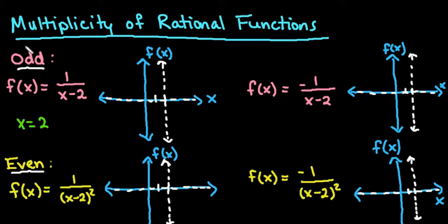The first thing I'm looking at is the odd multiplicity. Odd multiplicity means that the denominator has an odd degree. In this case, it's understood to be 1. There's just one x minus 2, same with this one.